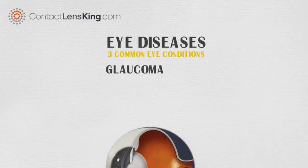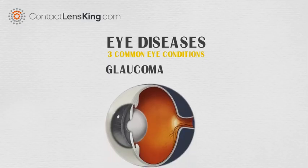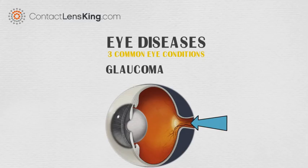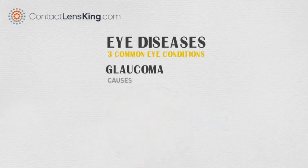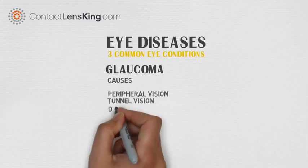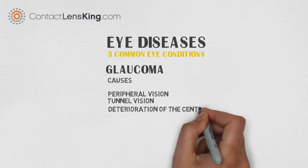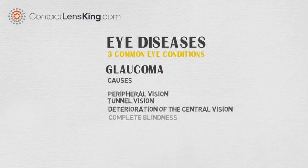The last disease we will discuss is glaucoma. Glaucoma is a disease that directly damages the optic nerve, and eye pressure buildup within the eye is the most common cause of that damage. This eye condition is very serious and can cause peripheral vision loss, tunnel vision, deterioration of the central vision, or even complete blindness.